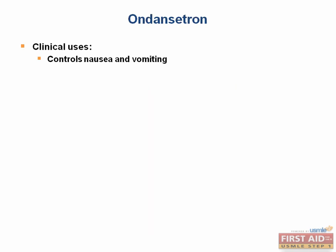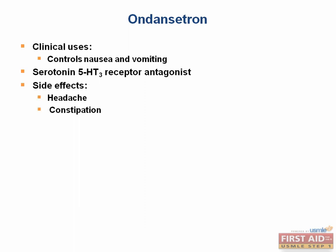Next, let's talk about ondansetron. Ondansetron is a medication you will become quite familiar with in the hospital, as it is used to control nausea and vomiting. It's a 5-HT3 receptor antagonist and acts centrally to prevent vomiting. It is used postoperatively for patients undergoing chemo and also in many other situations. Side effects include headache and constipation. A good mnemonic to help you remember the main use of ondansetron is that its anti-emetic effects help you to 'keep on dancing.'